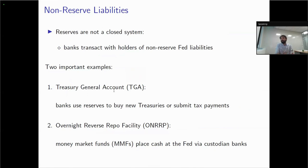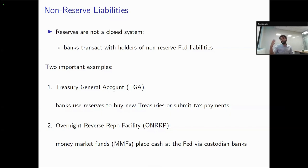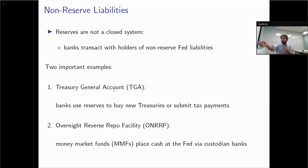Reserves are not a closed system because on a daily basis banks transact with holders of non-reserve liabilities. Two important examples: the Treasury General Account — when banks buy newly issued Treasuries, they pay using reserves, increasing the TGA and decreasing aggregate reserves. The other is the overnight reverse repo facility, used by money market funds to place cash at the Fed; when money funds place cash at the Fed, custodian banks use their own reserve balances, so an increase in overnight RRP implies a decrease in aggregate reserves.